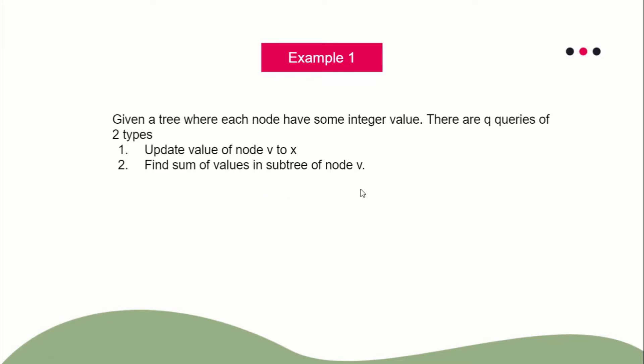All the range query techniques I'm talking about — like prefix sum, Fenwick tree, or segment tree — work on a linear data structure, i.e., an array. But a tree is a non-linear data structure. So first, we have to convert the non-linear data structure (tree) to a linear data structure (array). We do this by applying the Euler tour technique (ETT), also called tree flattening — which is simply a DFS. I've already explained this in the same course.